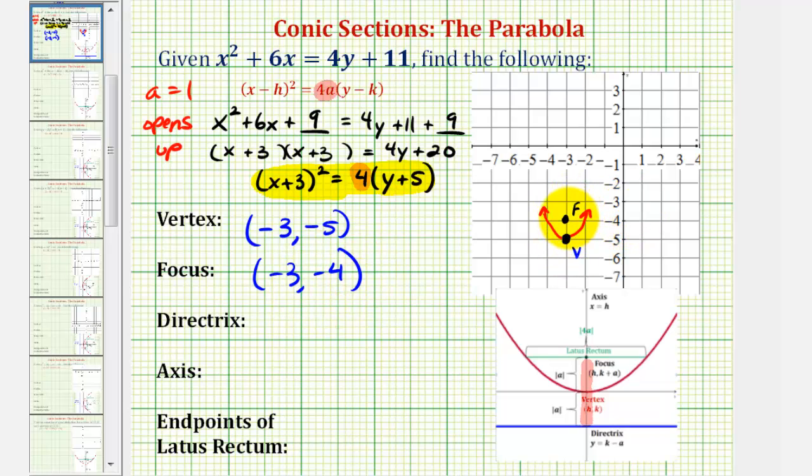And then the directrix would be 1 unit below the vertex, or a horizontal line passing through this point here. So, this would be our directrix, and because it's a horizontal line, we know the equation of this line would be y equals negative 6. Of course, another way to obtain this equation would be to subtract 1 from the y-coordinate of the vertex. Notice that negative 5 minus 1 is negative 6, which would give us our equation.